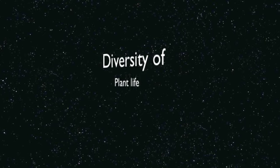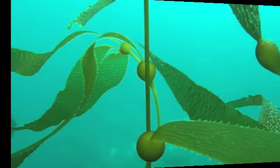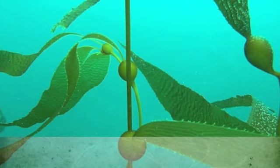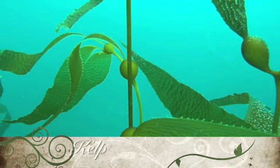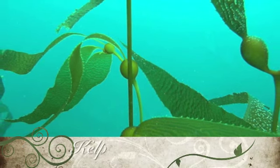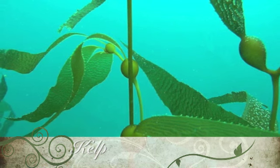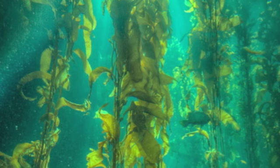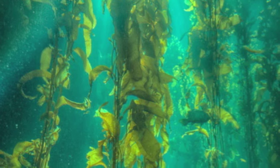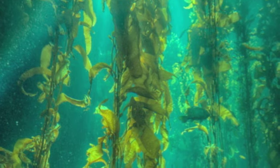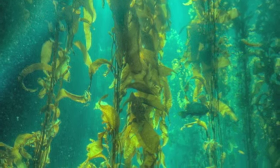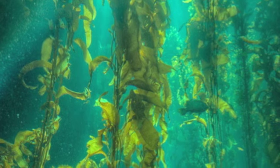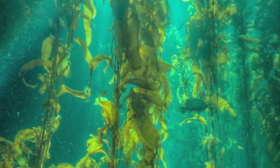Diversity of Plant Life. The first plant that we're going to talk about is kelp. Kelp is a type of seaweed that lives in cold water and grows approximately 150 feet tall. It is found mostly in Western Australia, Japan, Mexico, and California.